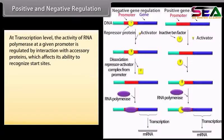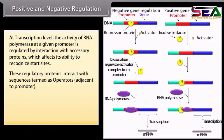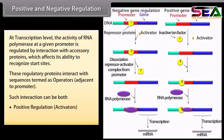At the transcription level, the activity of RNA polymerase at a given promoter is regulated by interaction with accessory proteins, which affects its ability to recognize start sites. These regulatory proteins interact with sequences termed as operators adjacent to the promoter. Such interaction can involve both positive regulation by activators and negative regulation by repressors.